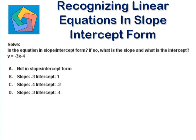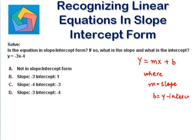Solve: is the equation in slope-intercept form? If so, what is the slope and what is the intercept? The equation is y = -3x - 4. Now, what is slope-intercept form? Slope-intercept form is given by y = mx + b, where m is our slope and b is our y-intercept. This is the form of slope-intercept form.